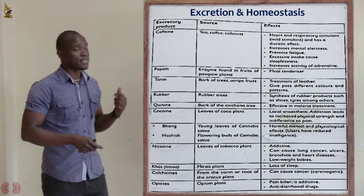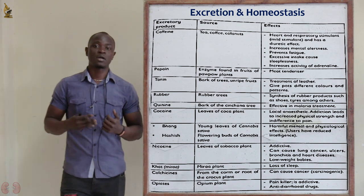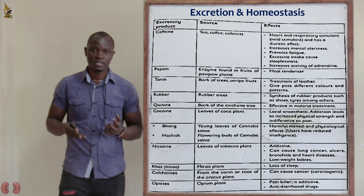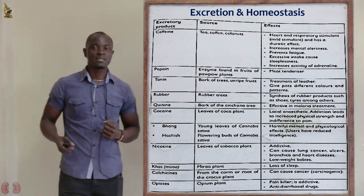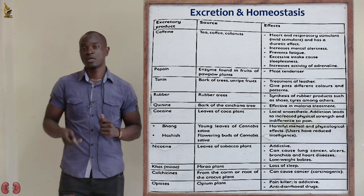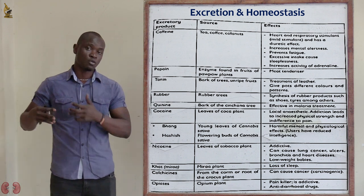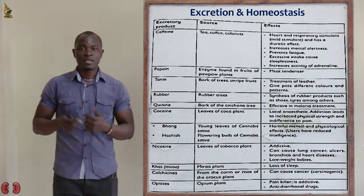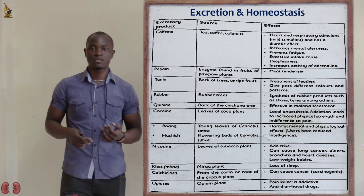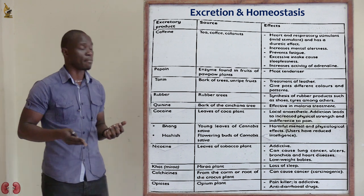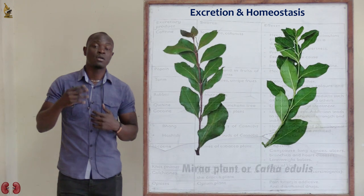Next, cocaine is obtained from the coca plant and is a very strong stimulant and depressant. After that, cannabis — commonly called bang — is obtained from the female cannabis plant. We also have nicotine, obtained from the tobacco plant, which acts as a mild stimulant.